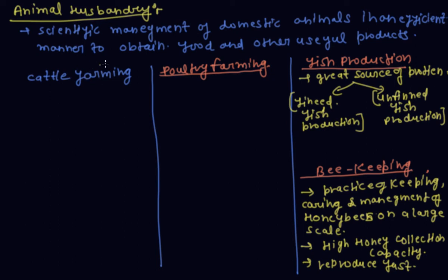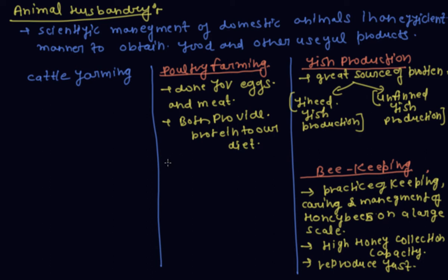Now discuss on poultry farms. Poultry farming is done for egg and meat. Both provide protein to our diet. Poultry farming is two types.